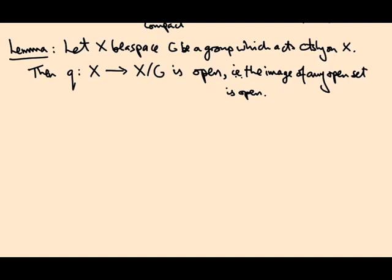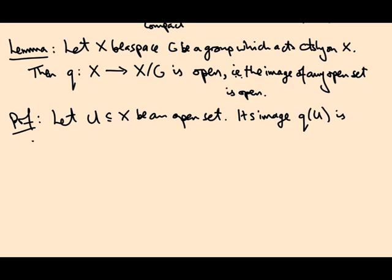So how do we prove this? Well we start with an open set in X and we want to look at its image. So let U be an open set in X. Its image q of U under the quotient map is open if and only if its pre-image q inverse of q of U is open in X. This is the definition of the quotient topology though. A set in the quotient is open if and only if its pre-image under the quotient map is open.